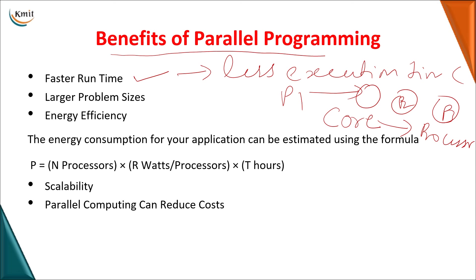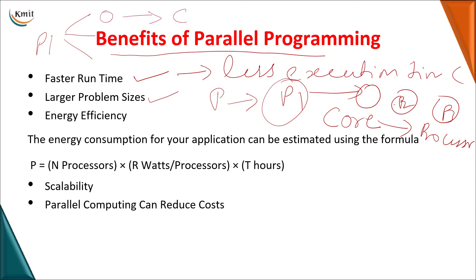Another benefit is the ability to handle a larger problem size — however huge the problem may be, you divide it into parts and assign each part to a particular computing unit or core. And there is also energy efficiency. You may think that using multiple cores means more energy consumption, but we use dynamic resource allocation. Depending on the problem size, if my machine has 12 cores, I may not use all 12 for every problem — I might use only 9 cores and switch off the remaining 3.